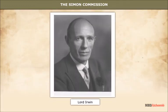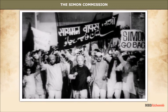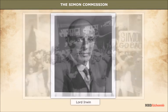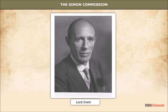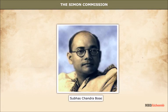The Simon Commission: Viceroy Lord Irwin announced in November 1927 the appointment of a statutory commission led by Sir John Simon to find ways of defusing the Indian situation. When it came to India in 1928, the commission was met with the slogan 'Simon Go Back.' In an effort to win them over, Lord Irwin announced in October 1929 a vague offer of dominion status for India to materialise at some unspecified date in the future. The radicals within the Congress, led by Jawaharlal Nehru and Subhash Chandra Bose, became more assertive.